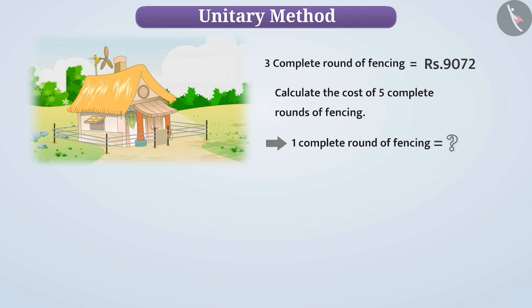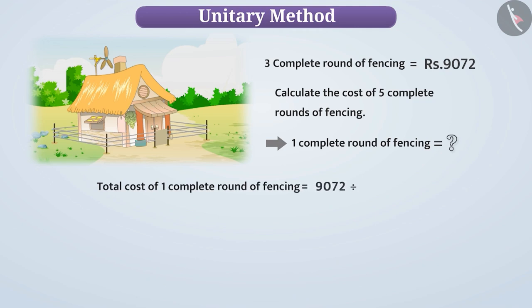Now, the question is how to find the value of one round of fence. The total cost of three complete rounds of fence is Rs. 9072. Similarly, the total cost of one complete round of fence is equal to 9072 divided by 3, which is equal to 3024.